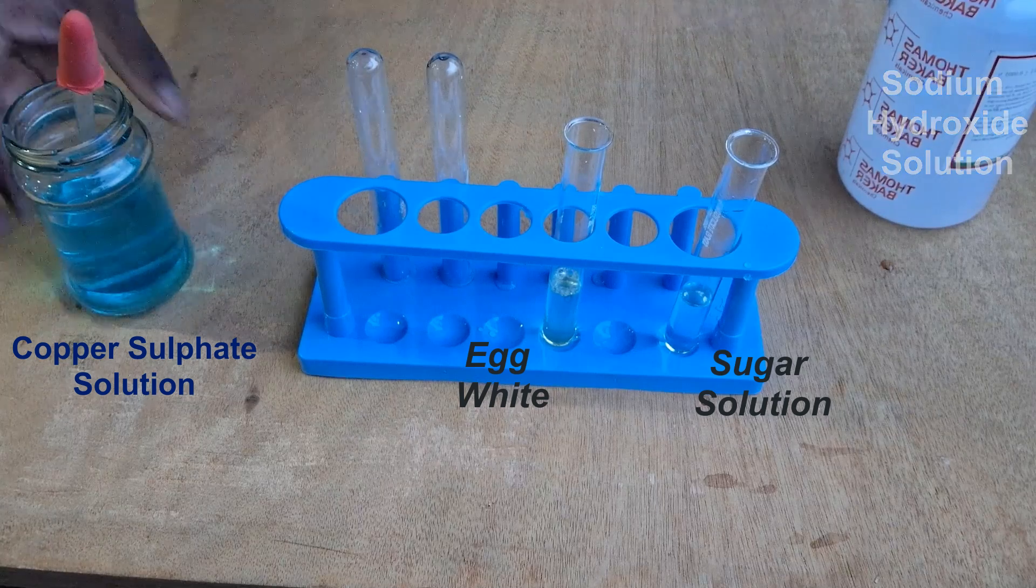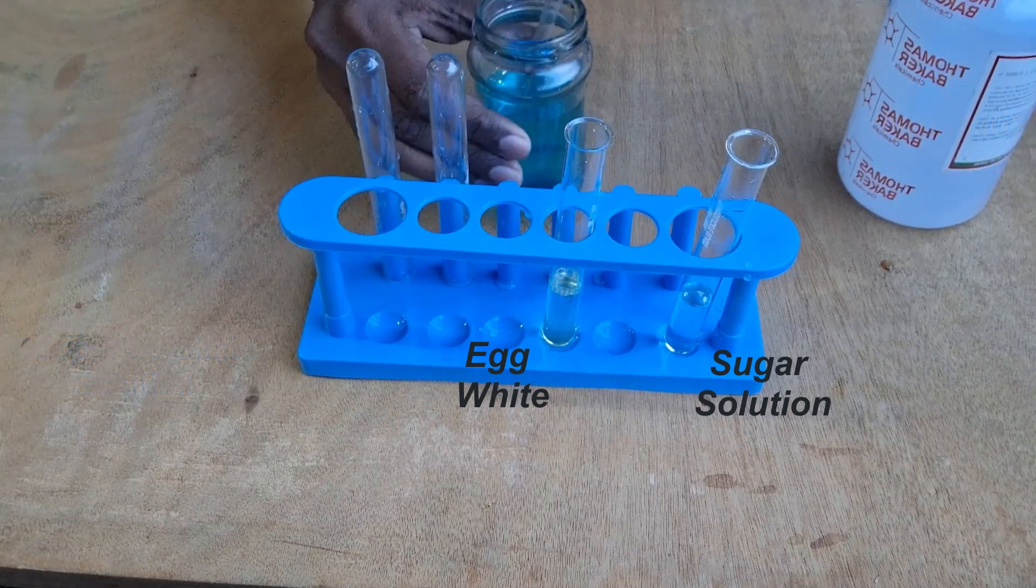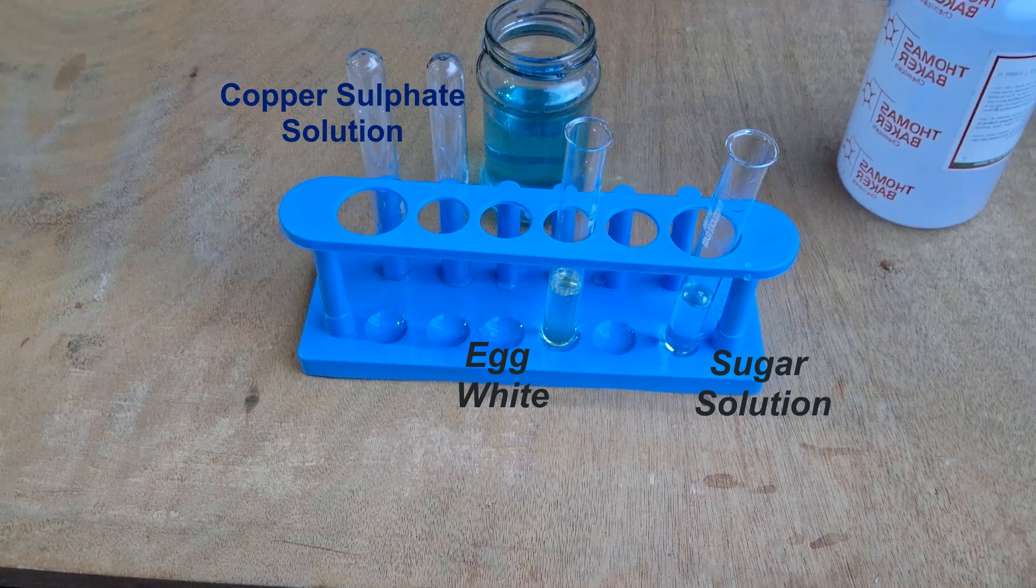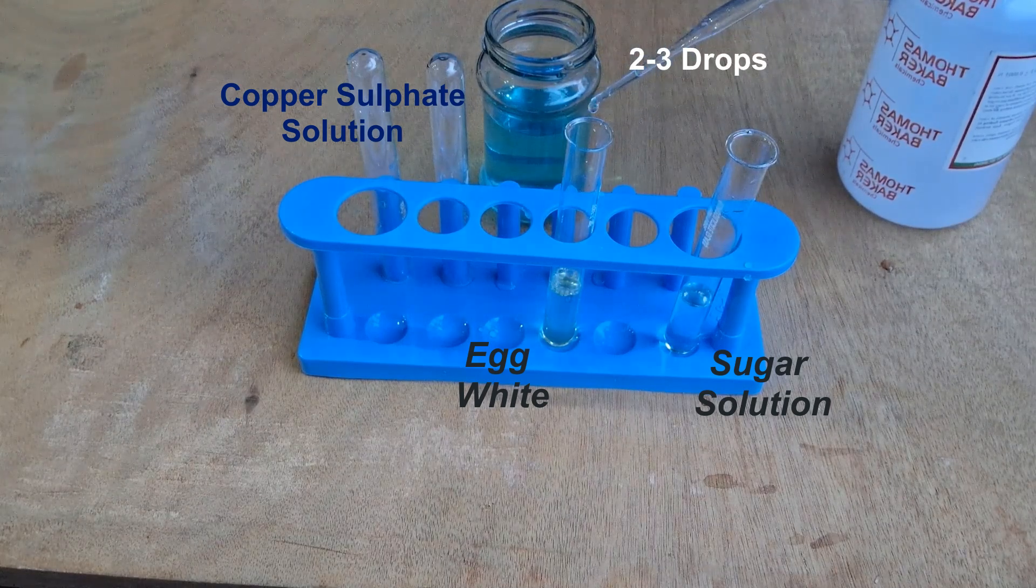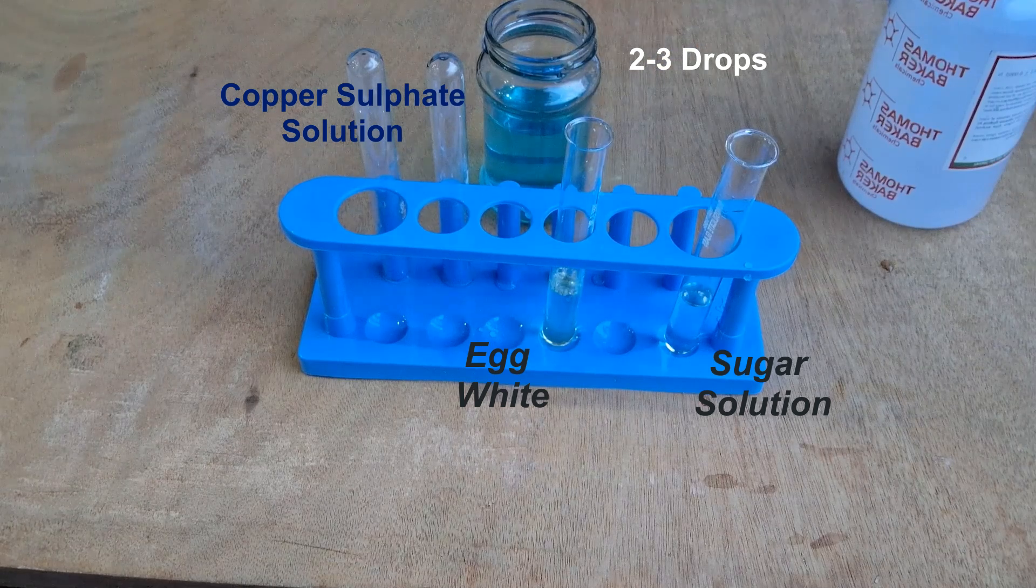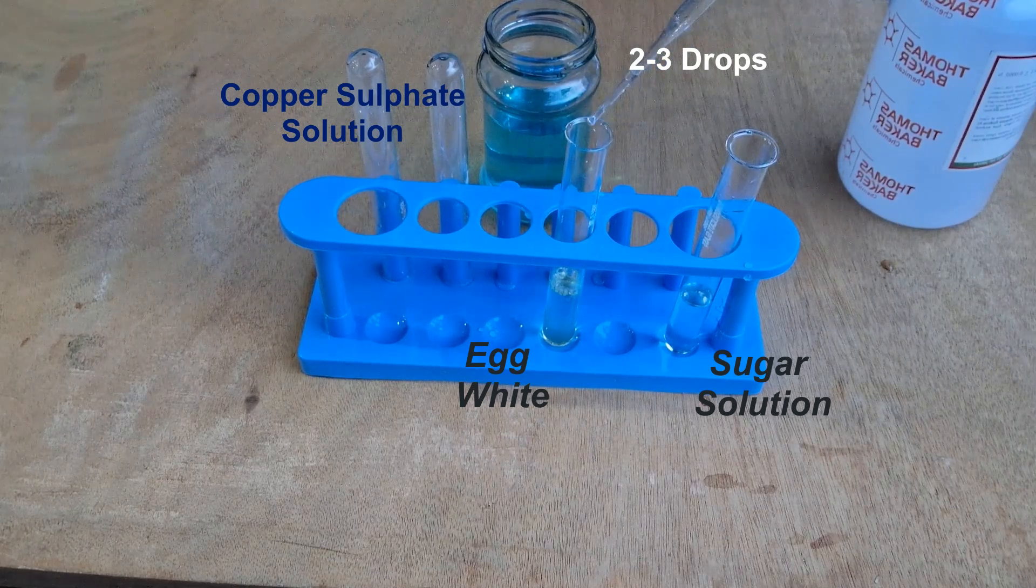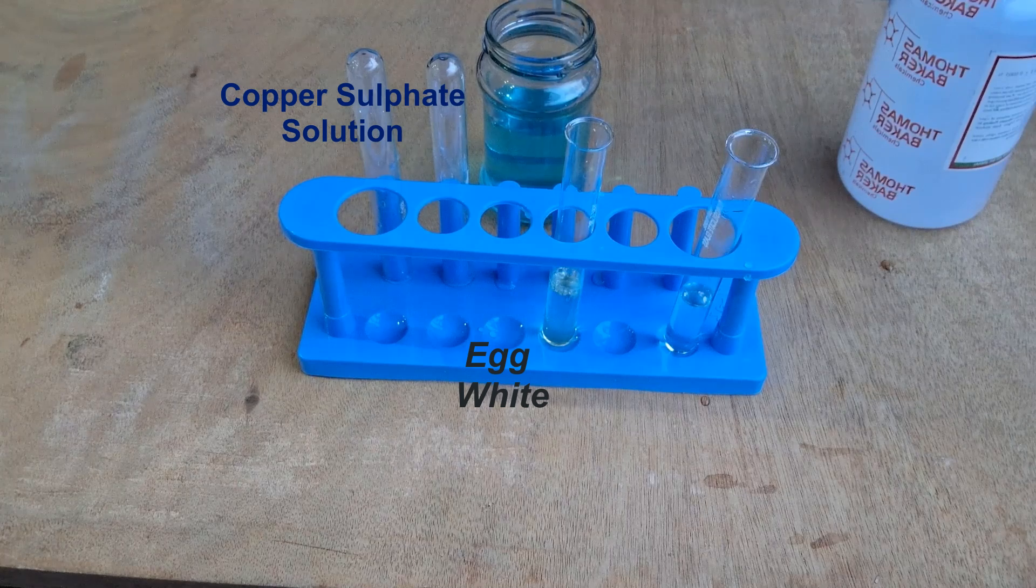Now we'll take copper sulfate solution using the dropper. I'll carefully put in two or three drops of copper sulfate solution into the test tube that contains egg whites. Don't put too much copper sulfate solution.